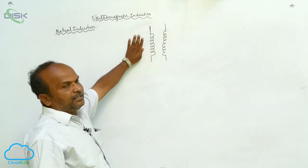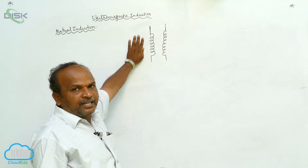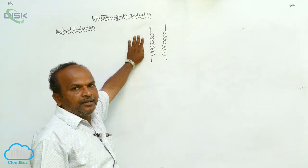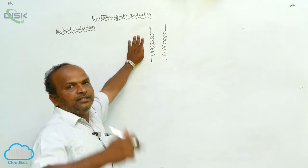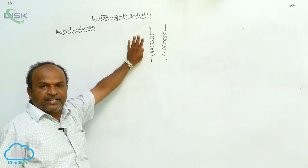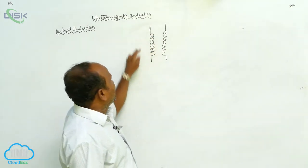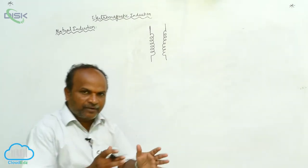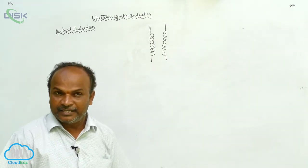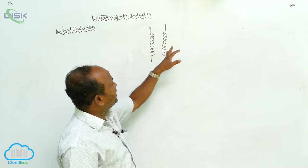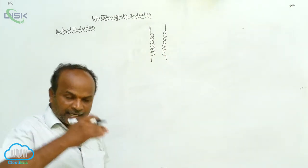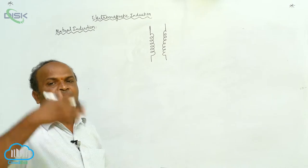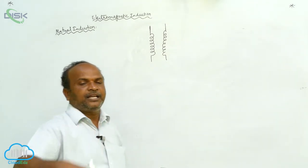If I change the current in the first coil, around the first coil there is a variable magnetic field. Because of the variable magnetic field around the first coil, there is a variable magnetic flux. In the surrounding of the first coil, the variable magnetic field is there.